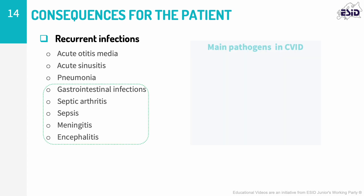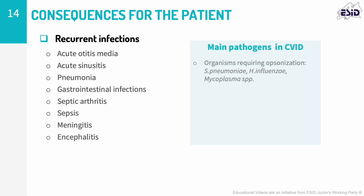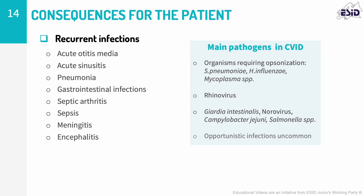Infections are usually caused by encapsulated bacteria, which require opsonization by antibodies as a primary host defense. Streptococcus pneumoniae, Haemophilus influenzae, and Mycoplasma account for the majority of respiratory infections. Rhinovirus is a common cause of rhinosinusitis. Acute diarrhea in patients with CVID is often due to Giardia, norovirus, or Campylobacter. Unusual or opportunistic infections with viral or fungal pathogens are uncommon in these patients.